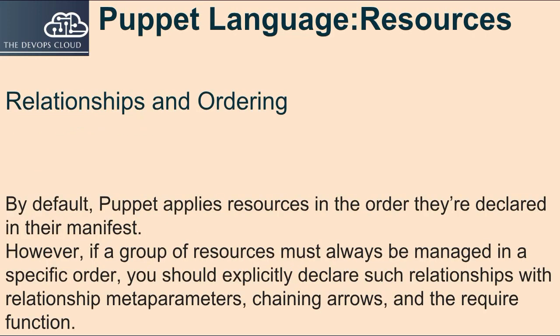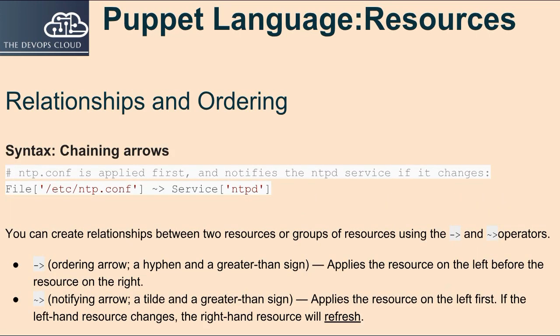Relationships and Ordering: By default, Puppet applies resources in the order they're declared in their manifest. However, if a group of resources must always be managed in a specific order, you should explicitly declare such relationships with relationship meta-parameters, chaining arrows, and the require function. You can create relationships between two resources or groups of resources using the hyphen-greater-than sign and tilde-greater-than sign operators.